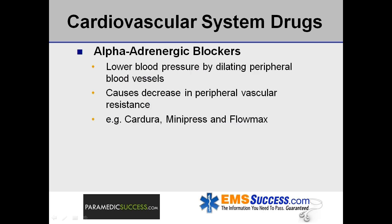Alpha adrenergic blockers are used to lower blood pressure by dilating peripheral blood vessels, causing a decrease in peripheral vascular resistance. Common examples include Cardura, Minipress, and Flomax.